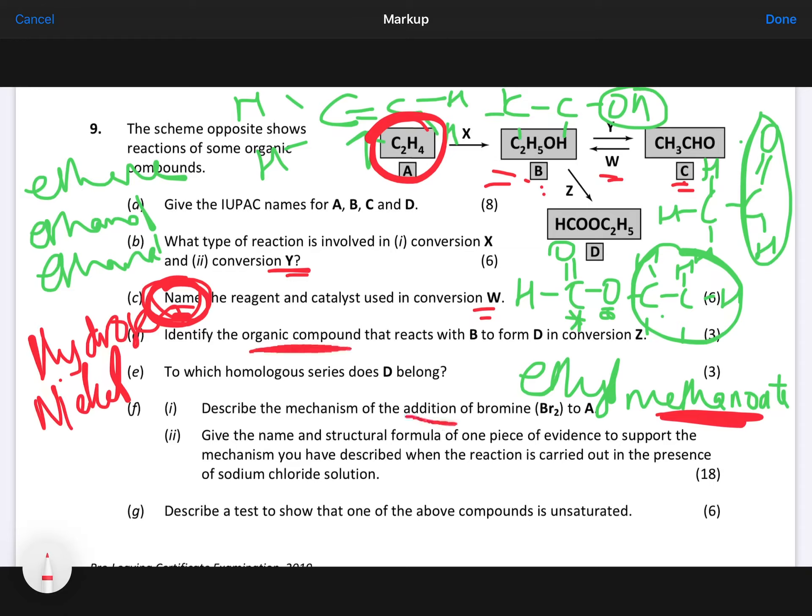Now, name the mechanism of the addition. Be careful that you don't describe the wrong mechanism of bromine to A. Now, A is ethene. So you're describing ethene and bromine. And the product there then that you'd be making would be the 1,2-dibromoethane. So you describe your mechanism and then give the name and the structural formula. So you have to draw out one of them or a piece of evidence to support the mechanism that you've just described. So do you remember we talked about adding sodium chloride to bromine water.